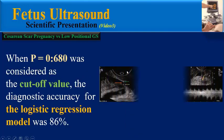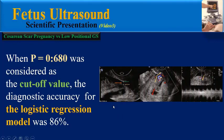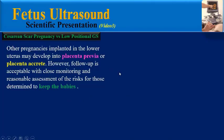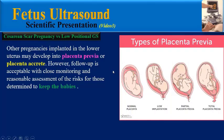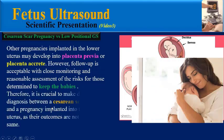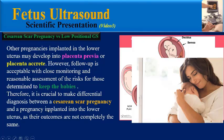When a p-value was considered as the cut-off value, the diagnostic accuracy for the logistic regression model was 86%. Now, discussing and comparing these two techniques: pregnancies implanted in the lower uterus may develop into placenta previa or placenta accreta. However, follow-up is acceptable with close monitoring and reasonable assessment of risk for those determined to keep the baby. Therefore, it is crucial to make a differential diagnosis between a caesarean scar pregnancy and a pregnancy implanted into the lower uterus, as their outcomes are not completely the same.